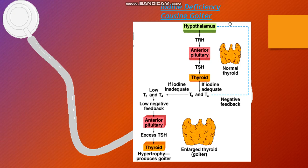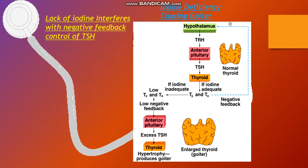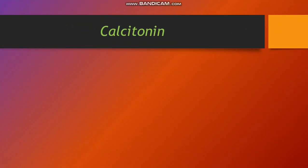Iodine deficiency causes goiter via the following pathway: the hypothalamus releases TRH, which stimulates the pituitary to release TSH. If iodine is deficient, T3 and T4 remain low. This low level reduces the negative feedback, causing excess TSH production, which leads to hypertrophy of the thyroid gland — the enlarged goiter. Lack of iodide thus interferes with negative feedback control.